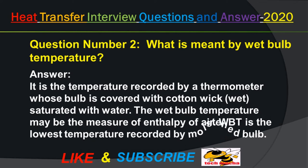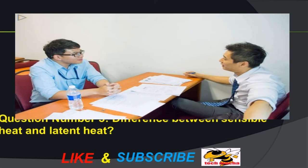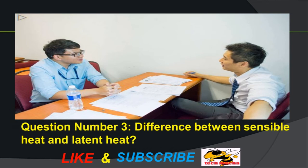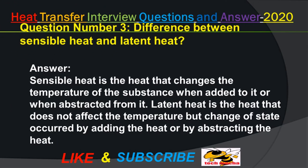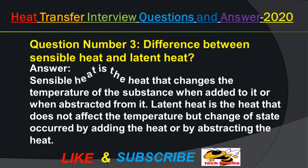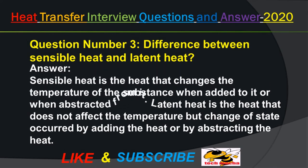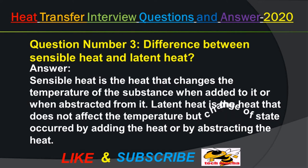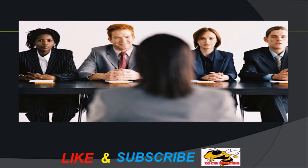The wet bulb temperature may be the measure of enthalpy of air, and wet bulb temperature is the lowest temperature. Question number 3: Difference between sensible heat and latent heat? Answer: Sensible heat is the heat that changes the temperature of the substance when added to it or when abstracted from it. Latent heat is the heat that does not affect the temperature but a change of state occurs by adding the heat.